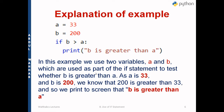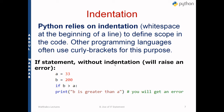In this example, variables a and b are used to test whether b is greater than a. Since a is 33 and b is 200, and 200 is greater than 33, the program will print 'b is greater than a'. If b were not greater than a, nothing would be printed because the condition would not be true.